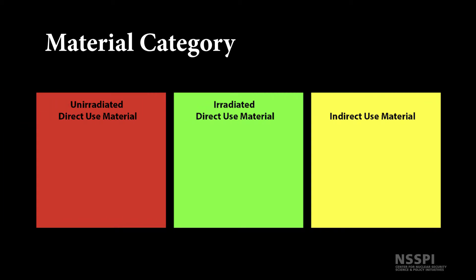The material category is a way of categorizing nuclear material according to its irradiation status and its suitability for conversion into components of nuclear explosive devices. The three material categories are unirradiated direct-use material, irradiated direct-use material, and indirect-use material.